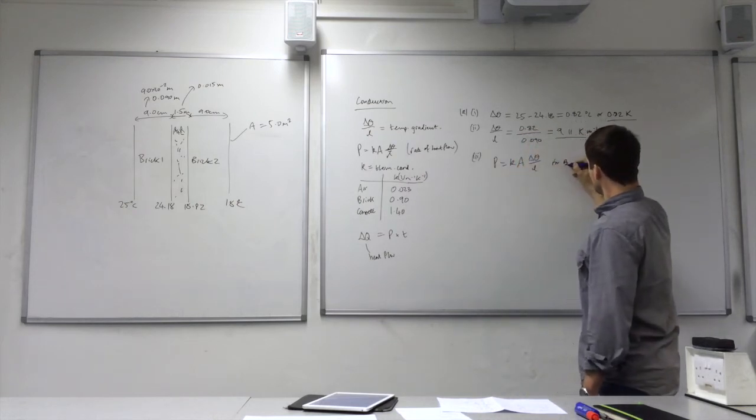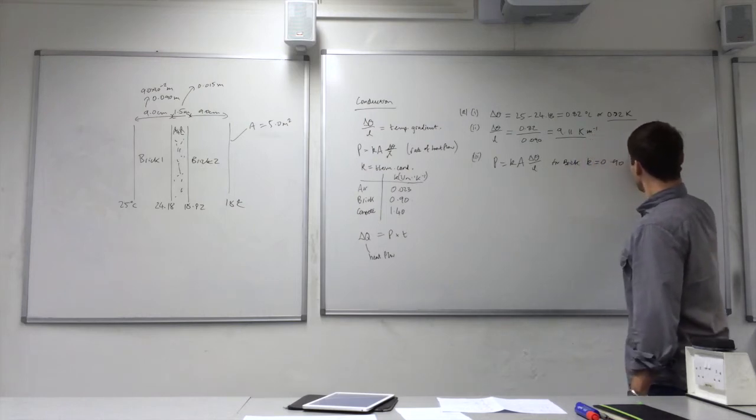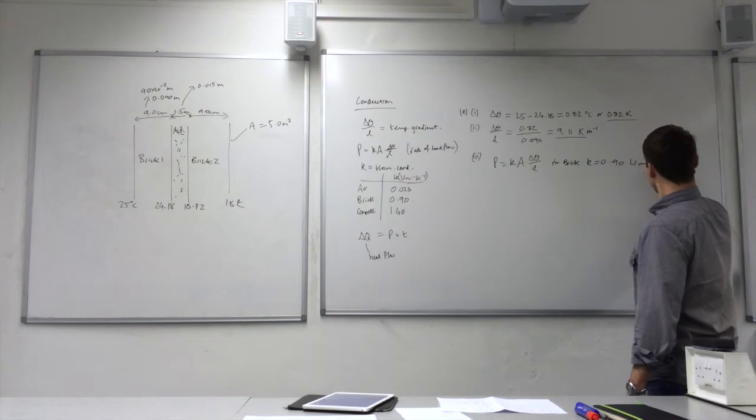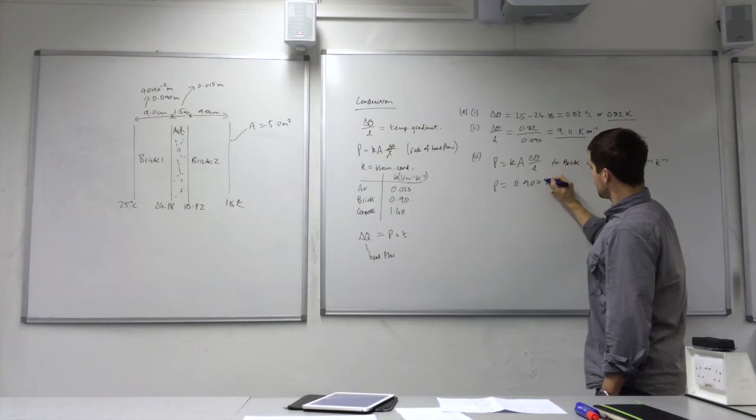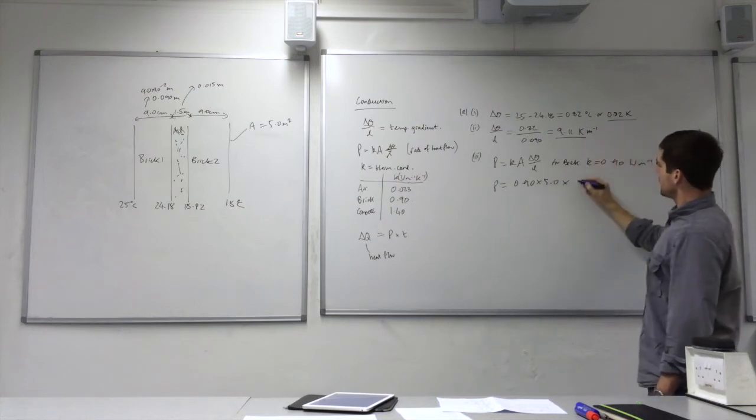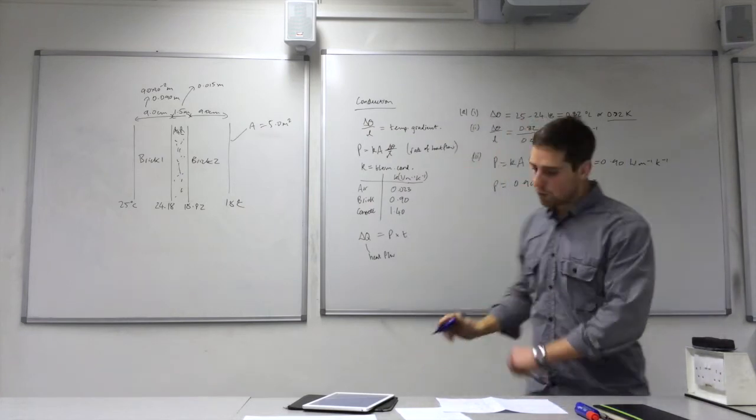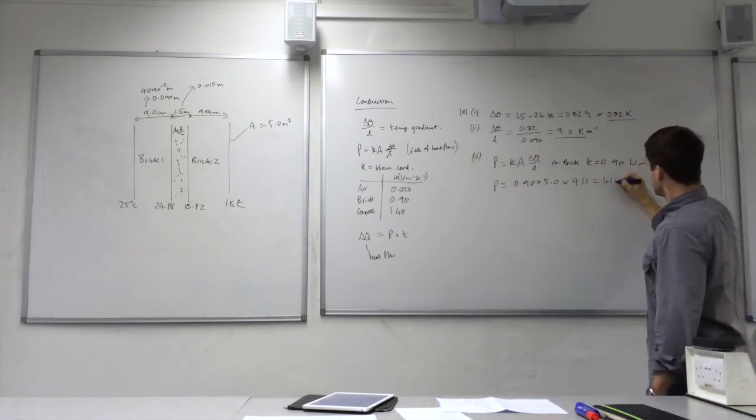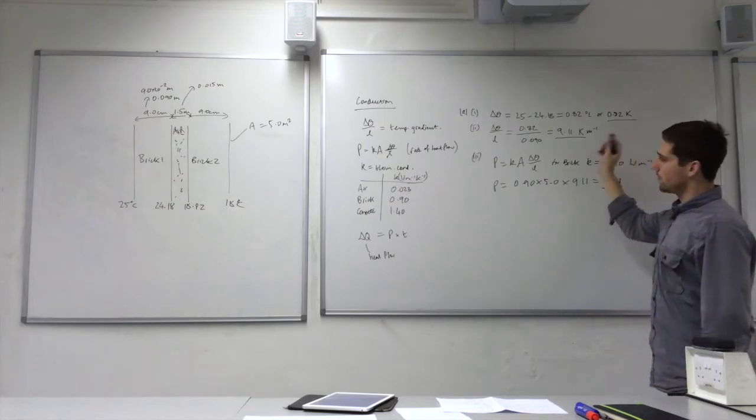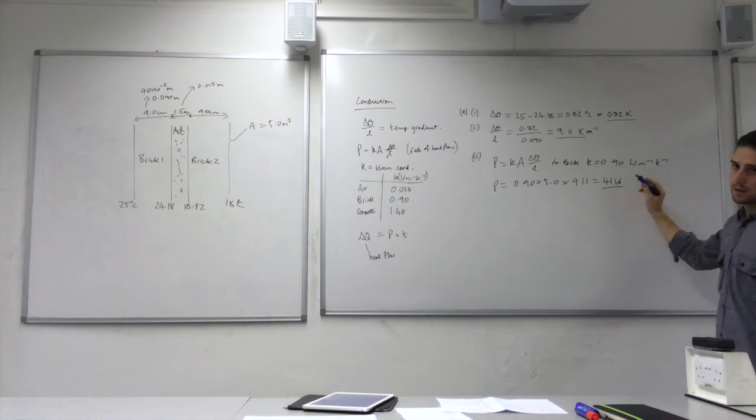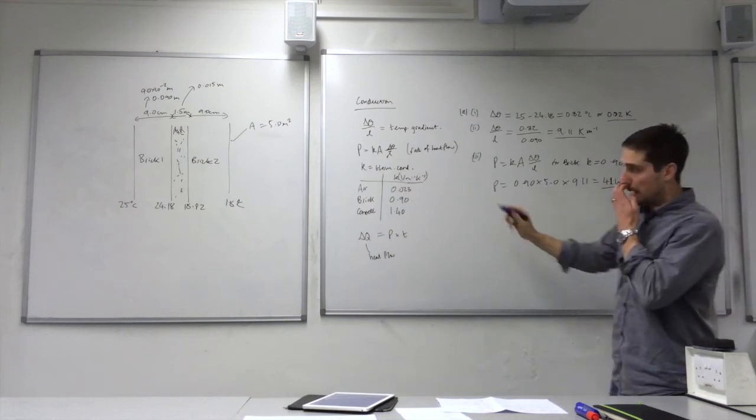So for brick, put the values in there, 0.90 times 5, times 5, that value there, 9.11. And that will come out as 41 watts. So give units for all of your values that you use when you state them as an answer. This is 41 watts. That's the rate of heat flow through the brick.